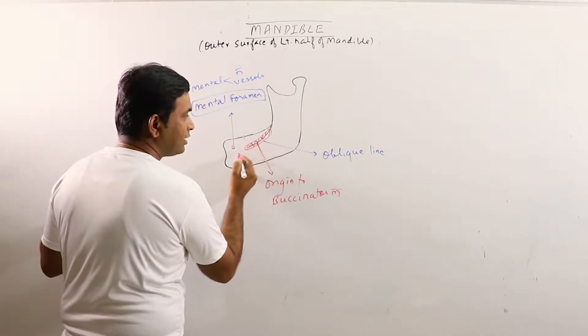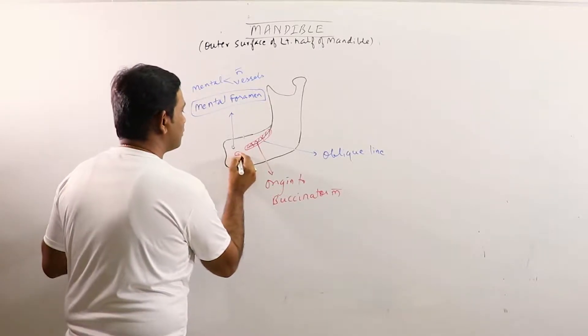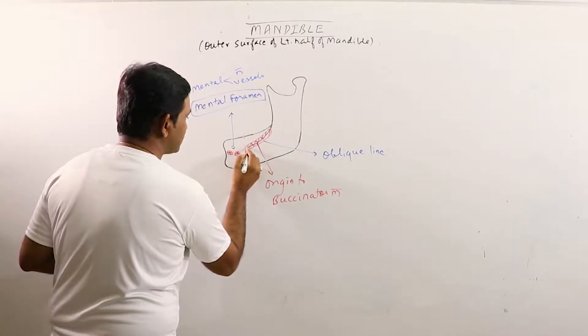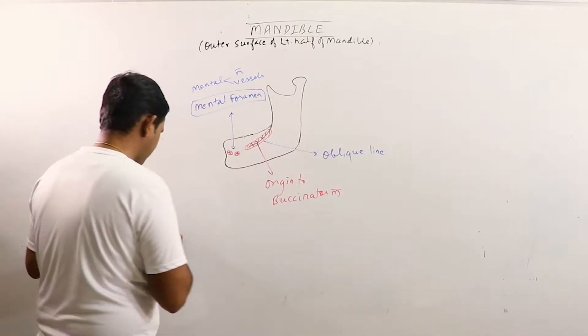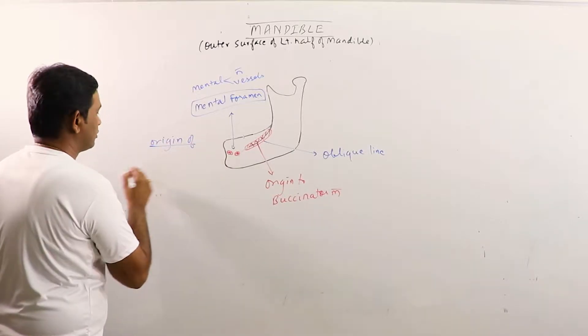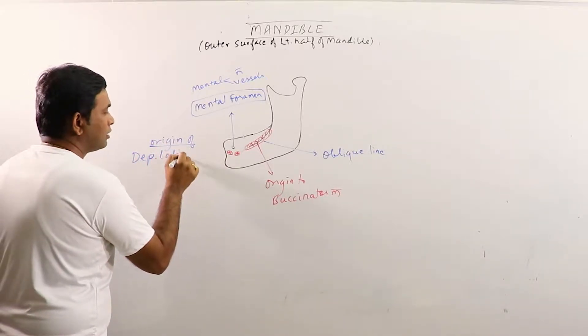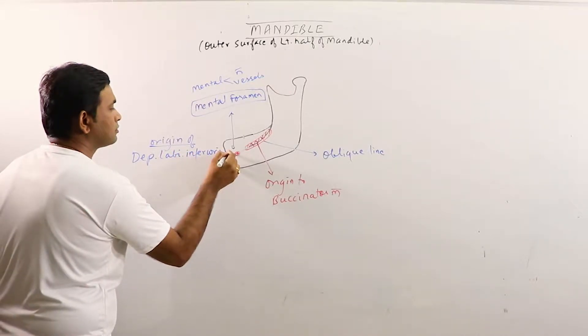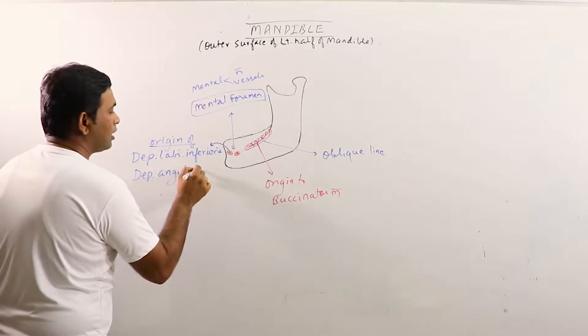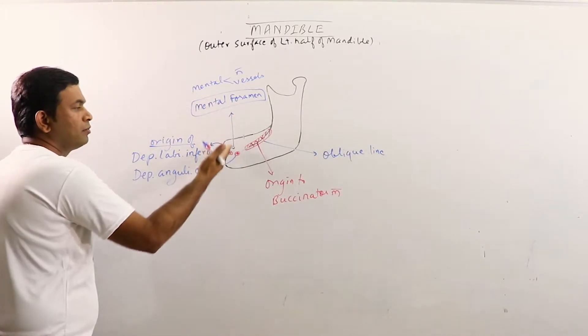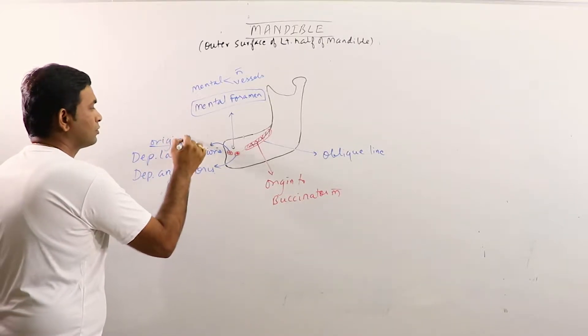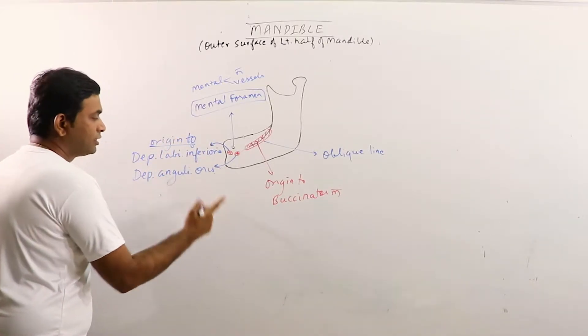Just anterior to the origin of buccinator muscle we can observe two more origins given by the oblique line. These are origin of depressor labii inferioris and depressor angularis oris. Just below the mental foramen and anterior to the origin of buccinator muscle, the oblique line gives origin to these two muscles.